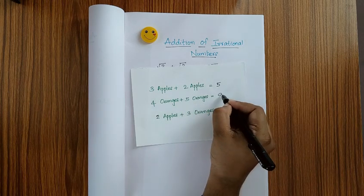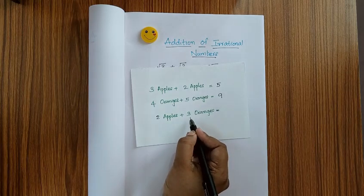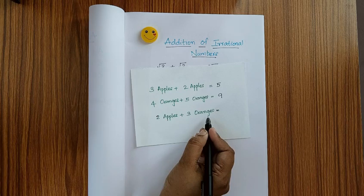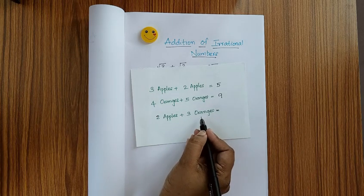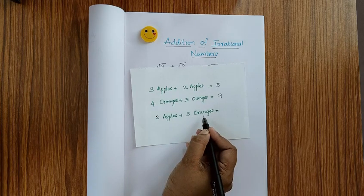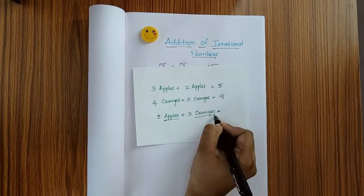2 apples plus 3 oranges. So friends, what will be the sum here? We can't add, right? Here 2 apples and 3 oranges are to be added, but it's not possible because apples and oranges are entirely different things.